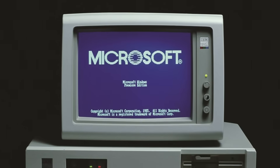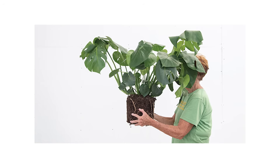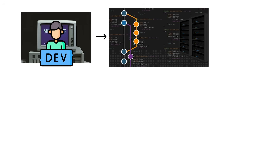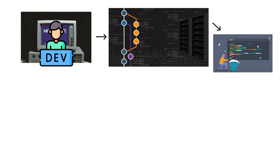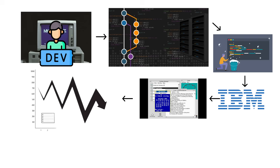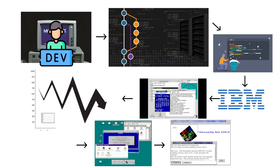The biggest problem was compatibility. Microsoft quickly shifted its focus toward Windows, giving IBM OS/2 the same level of attention you give a houseplant you regret buying. Most developers followed Microsoft's lead, writing their software exclusively for Windows, instead of maintaining two separate codebases. IBM tried to fix this with a subsystem that let OS/2 run Windows applications, but the performance and compatibility were inconsistent. If an app launched correctly, it often behaved like it was being held together with glue and optimism.